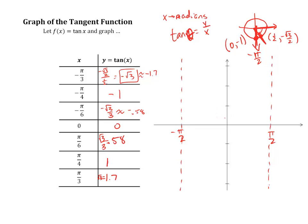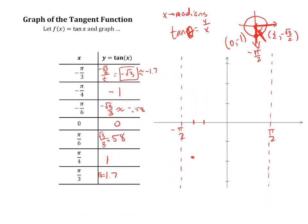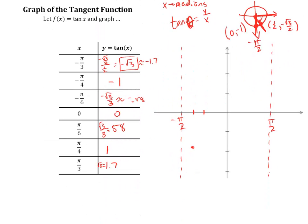However, at negative π over 3, which is about two-thirds of the way there, you are at negative 1.7. So negative 1.7 is about right here. If you are at π over 4, which happens to be halfway, halfway is going to be at a height of negative 1.